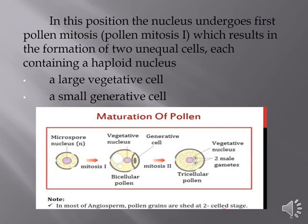In this position, the nucleus undergoes the first pollen mitosis, resulting in the formation of two unequal cells, each containing a haploid nucleus. These two unequal cells are one large vegetative cell and one small generative cell. As you can observe here, this is the large vegetative cell and this is the small generative cell.